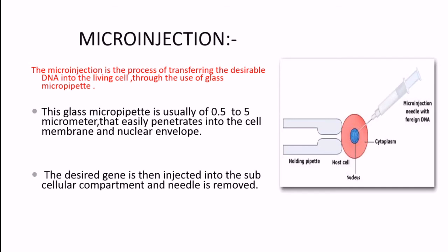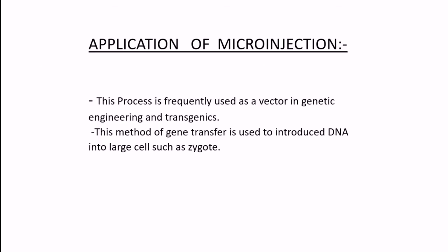What are the applications of microinjection? It is frequently used as a vector in genetic engineering and transgenics. In this method, DNA is introduced into large cells such as zygotes, mainly through the fertilization process in animals to create transgenic animals.